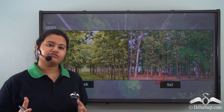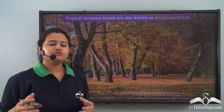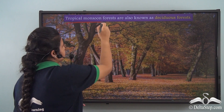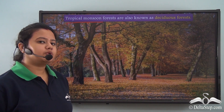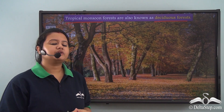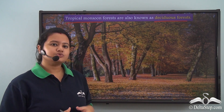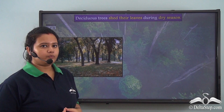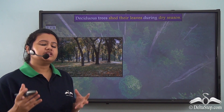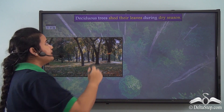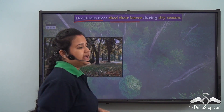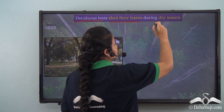Do you know where these hardwood trees are found? Hardwood trees like teak, sal, etc. grow in tropical monsoon forest. Another name for tropical monsoon forest is deciduous forest. Do you know why these tropical monsoon forests are also named as deciduous forest? In this video we can see that leaves are falling off the trees. This is an important characteristic of deciduous forest — the trees shed their leaves annually, especially before the onset of the cold dry season.